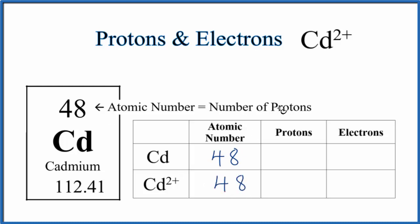Atomic number equals the number of protons. So for Cd, 48 protons. Same for the ion. The only difference between atoms and ions is the number of electrons. So this is all the same.